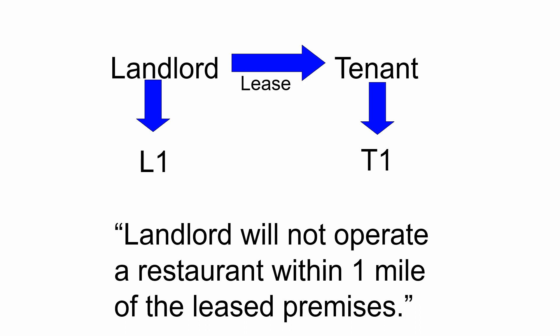Here's one more example. The landlord promises not to operate a restaurant within one mile of the lease premises, likely because the tenant is running a restaurant and doesn't want competition. It's obviously beneficial to the tenant to avoid competition from the landlord, and it's a burden to the landlord who might otherwise want to run a restaurant in the vicinity. So the landlord's interest is burdened and the tenant's interest is benefited.